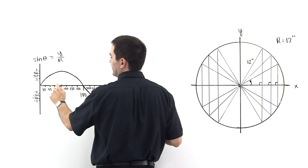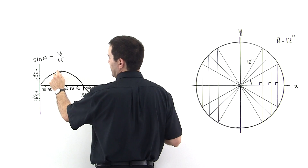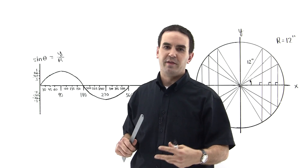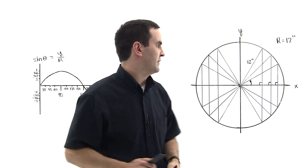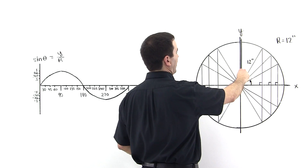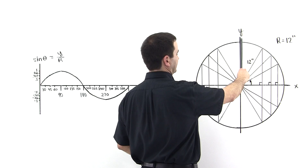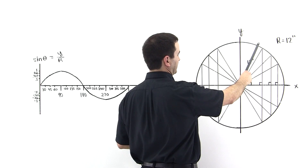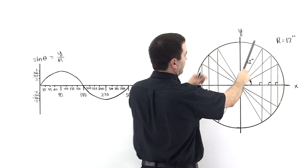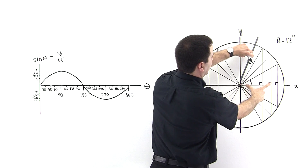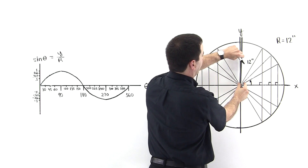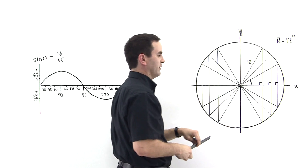Of course, we see the number 1 at 90 degrees because at 90 degrees it's just the radius divided by the radius. The height of the triangle equals the radius because the width of the triangle gets shorter and shorter until it equals zero.